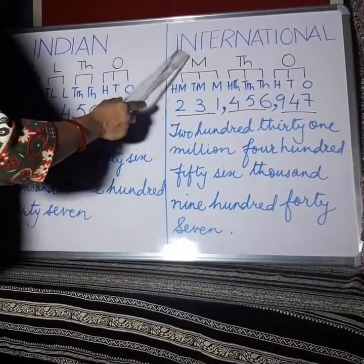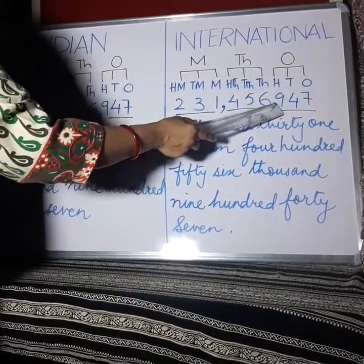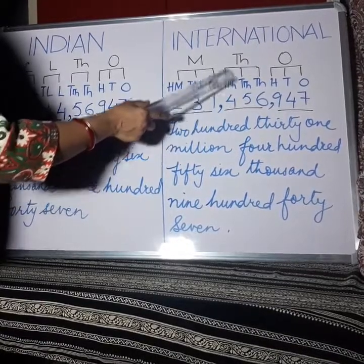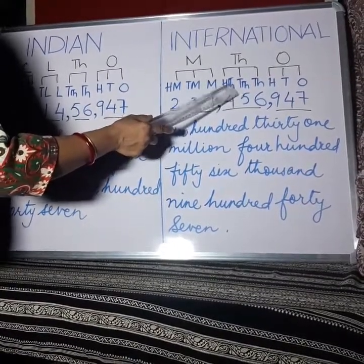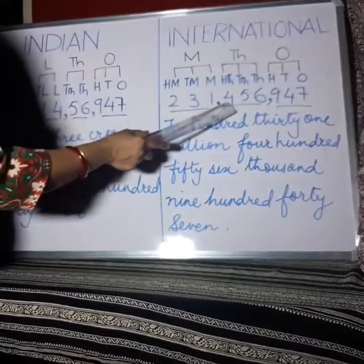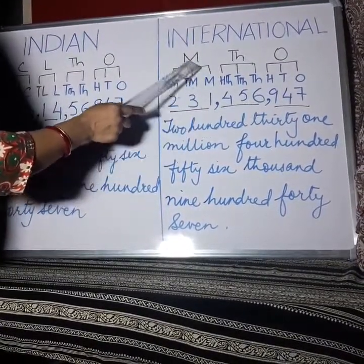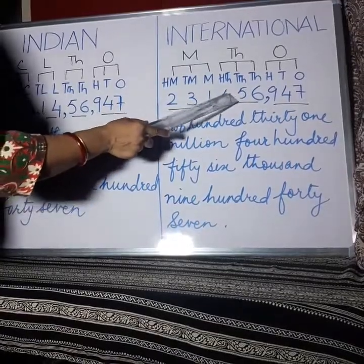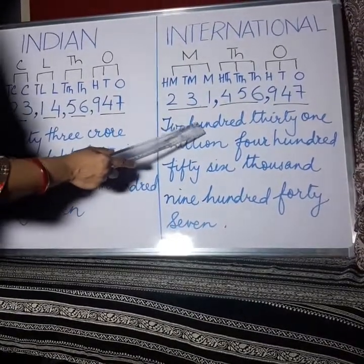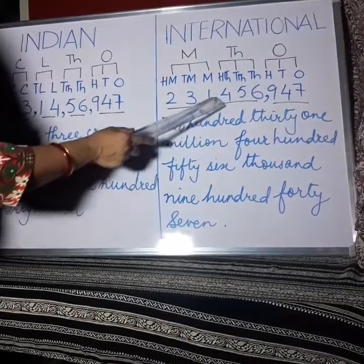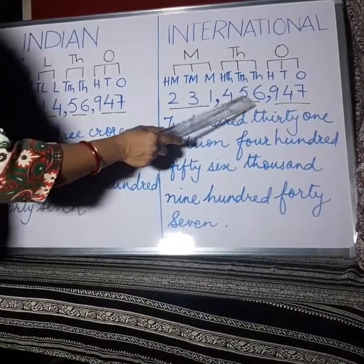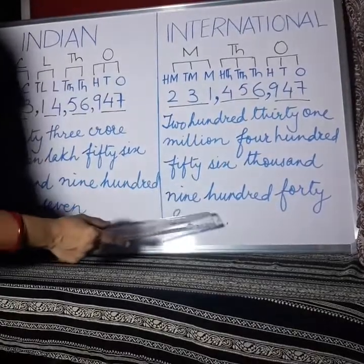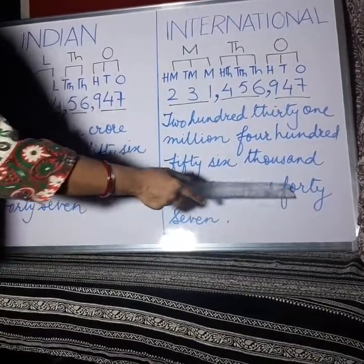Now, in the International System, we have one period with three digits — this is the same as the Indian System. But the remaining two periods each have three digits. The Thousands period has 100,000, 10,000 and 1,000. And in the Millions period, 100,000,000, 10,000,000 and 1,000,000 — we read these three digits together. For example: 231,000,000, then a comma, 456,000, then a comma, 947.